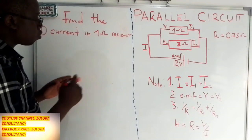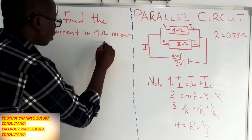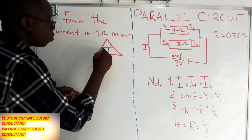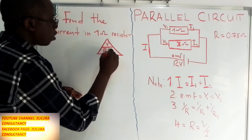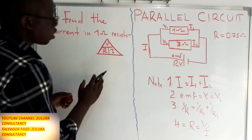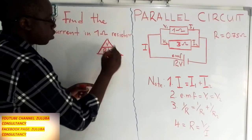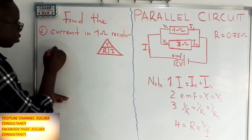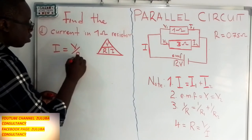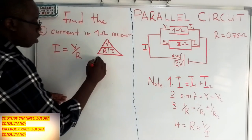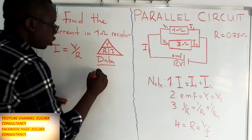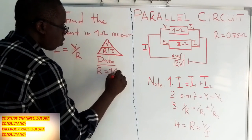To apply Ohm's law easily, we use a triangle with resistance, voltage, and current. Since we need to find current, we cover the current position in the triangle. This gives us: current equals voltage divided by resistance. The resistance in question is the 1-ohm resistor.